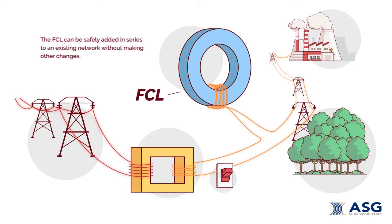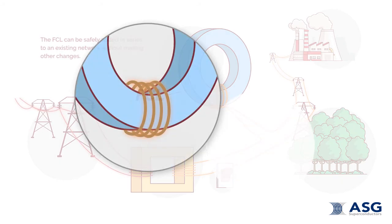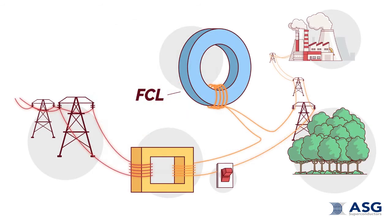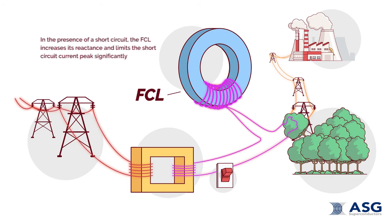Under normal conditions, the FCL presents a negligible reactance and dissipates very little energy. In the presence of a short circuit, the FCL increases its reactance, limiting the short circuit current significantly.